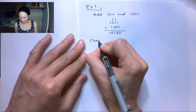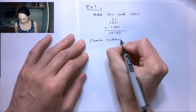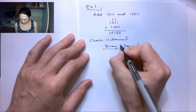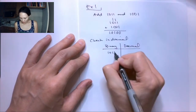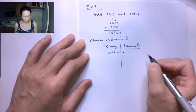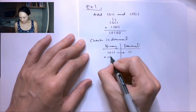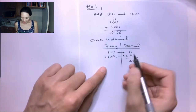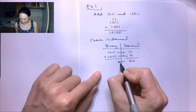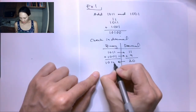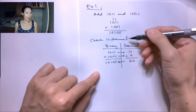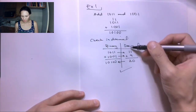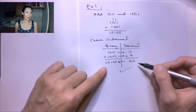Let me check that in decimal. Binary 1011 converts to decimal 11. Binary 1001 converts to decimal 9. 11 plus 9 equals 20. Converting 20 back to binary gives 10100, which is indeed what we got from our binary addition. I feel very comfortable checking in decimal — I have a good intuitive sense for it — which is why I like to verify my binary work this way.